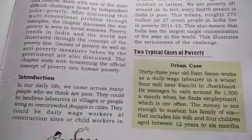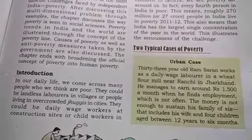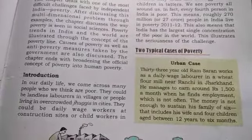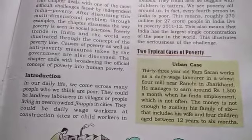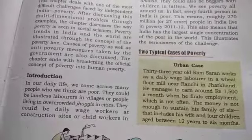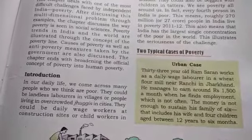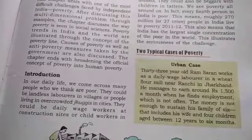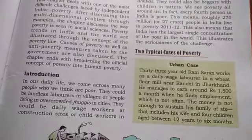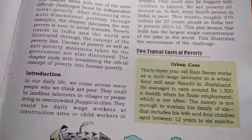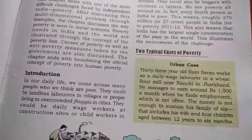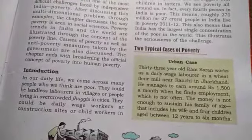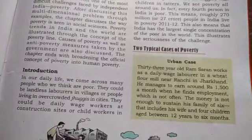Two typical cases of poverty. We will study two cases — an urban case and a rural case. These two cases show the many dimensions of poverty, including lack of proper food, shelter, healthcare, education, as well as clean water and sanitation. They also show lack of a regular means of livelihood.